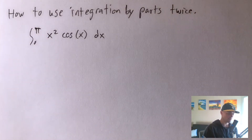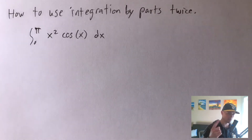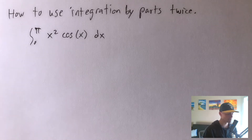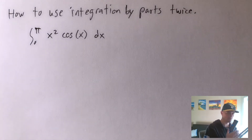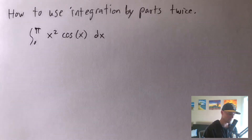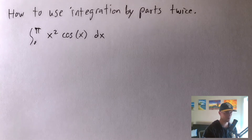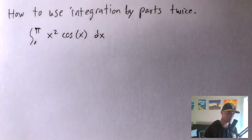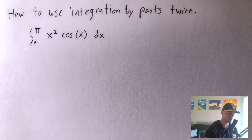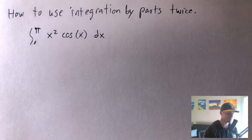I've already done another integration by parts twice kind of problem, but this one's a little different because here we have a definite integral. If you want to check that out, I'll put a link up in the corner or down in the description. But this one's going to use the formula from my Calculus 2 study guide — there's a link in the description — specifically the version of integration by parts having to do with definite integrals and actual bounds.